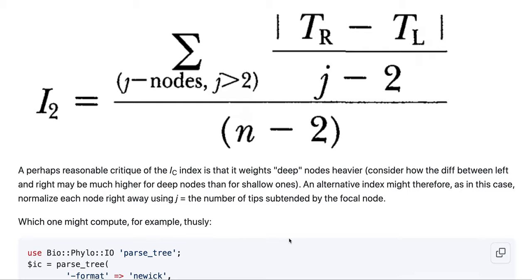Again, let's not memorize, just let's remember that there are pretty simple metrics that can tell us if there is perhaps some kind of lineage-specific diversification rate that is higher for some lineage than for others.